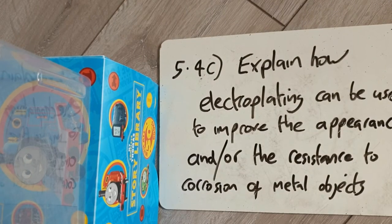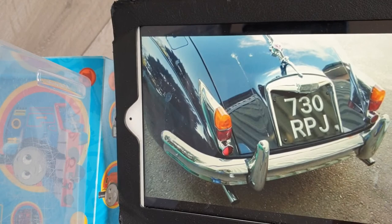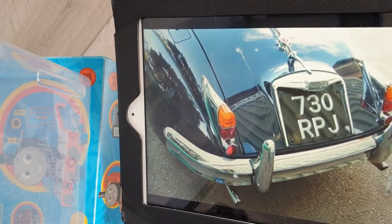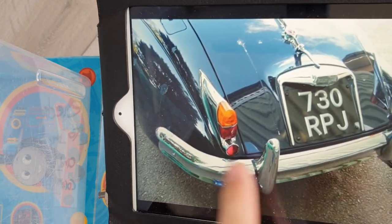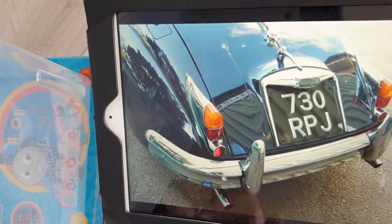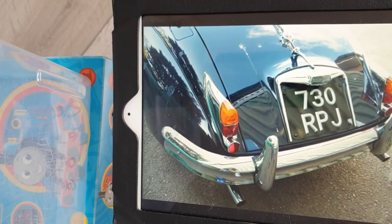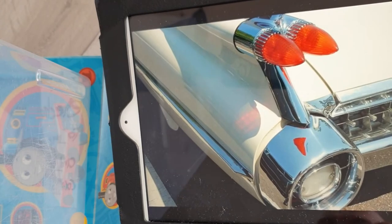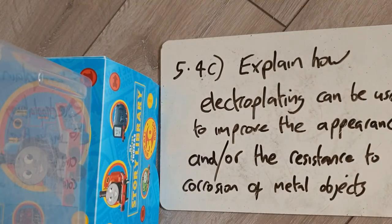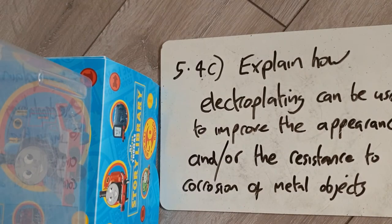Chrome is used for many car parts. The bumper is made of steel, which contains iron and would corrode and rust over time, but you electroplate it with a very thin layer of chrome. This gives a nice shiny mirror finish — improving appearance — and stops it from rusting. You see this on old 1950s American cars and fancy motorbikes.